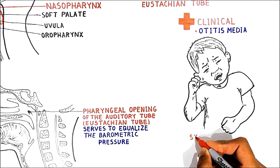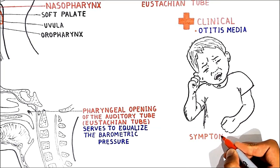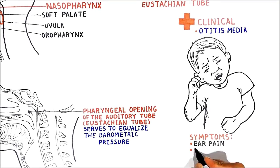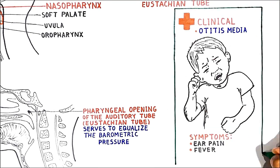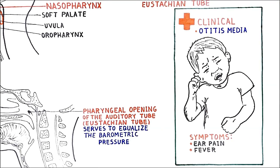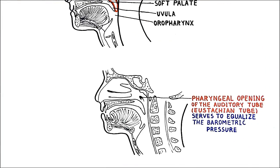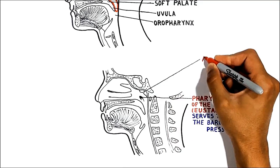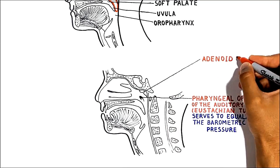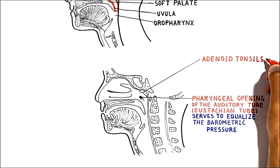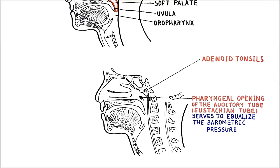An integral symptom of acute otitis media is ear pain and fever. In the posterior wall of the nasopharynx, there are lymphoid tissue structures called the adenoids, also known as the pharyngeal tonsils, which are present between the ages of three to eight and then regress.